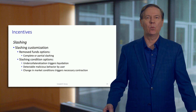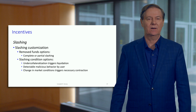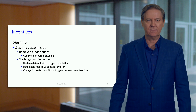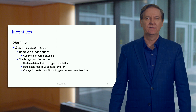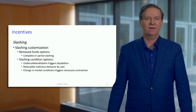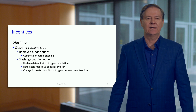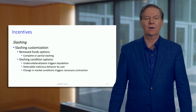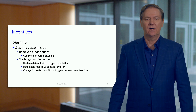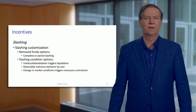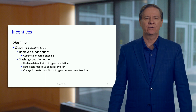There are many different ways to do slashing. There could be a complete slash, meaning everything you've staked is gone, or it could be a partial slash — for example, if you fell below a collateralization ratio. Many different conditions can trigger a slash, including under-collateralization, malicious behavior, or changes in market conditions such as volatility or price movements that affect potentially many users' balances.